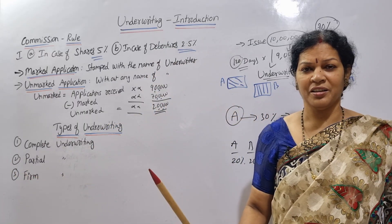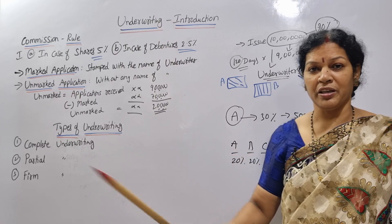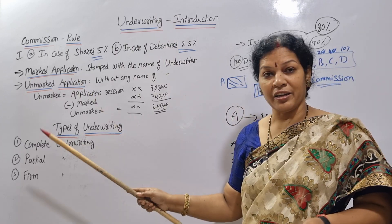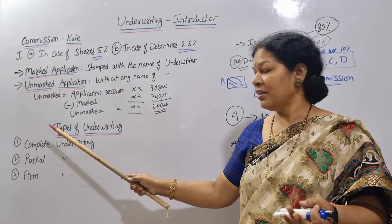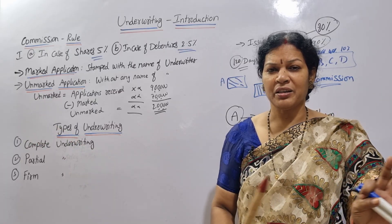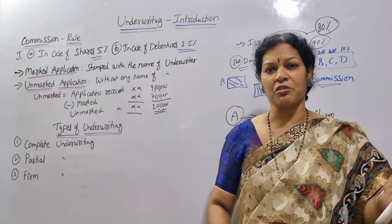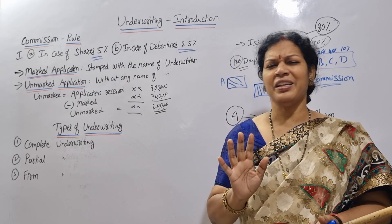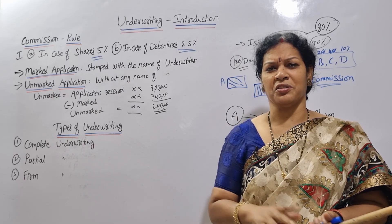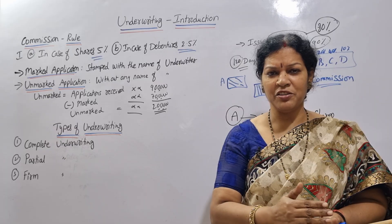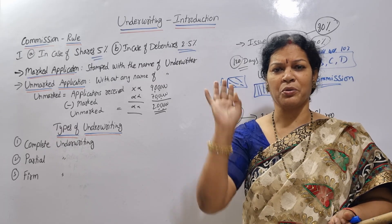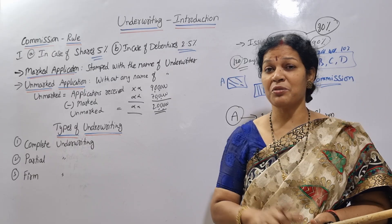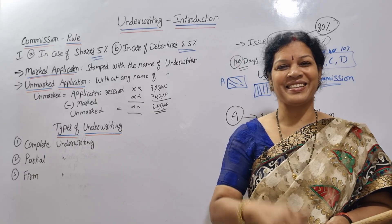Is it clear? Now the concept of underwriting — underwriters, commissioning, how to calculate, marked, unmarked, and types of underwriting. If you have clarity here, we will work on practical problems in the next class. Check the playlist to use it at any time. See you in the next class with a practical problem. Stay connected. Good luck.